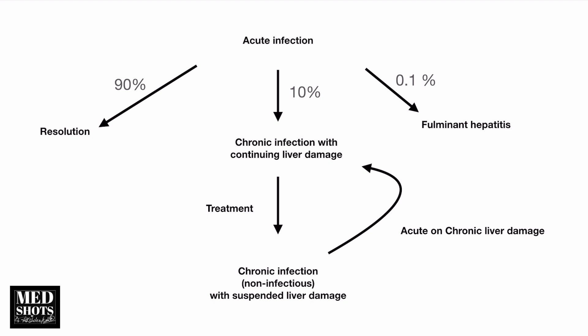In acute infection serology: HBsAg says I am Hepatitis B infected; HBeAg says I have good infectivity; and anti-HBc IgM is present, indicating acute infection. There is also a replicating viremia with complete Dane particles.